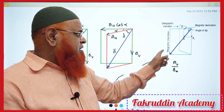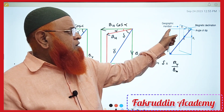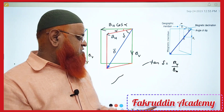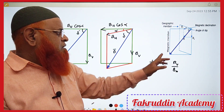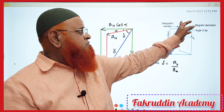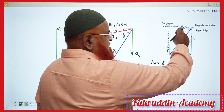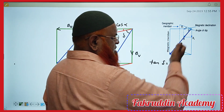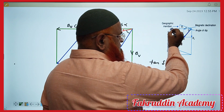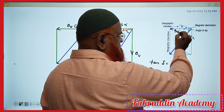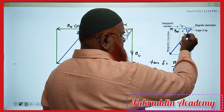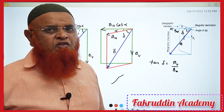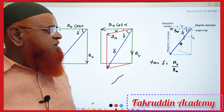This is called the magnetic meridian plane. The back part considered here is the geographic meridian. So in this magnetic meridian, the point B making a certain angle with BH — this angle is called the angle of dip, or angle of inclination.